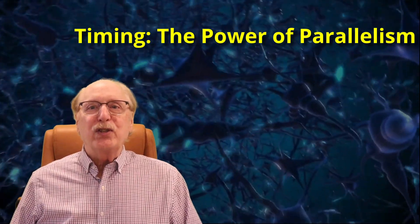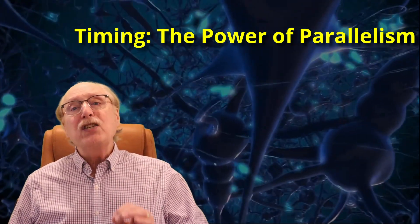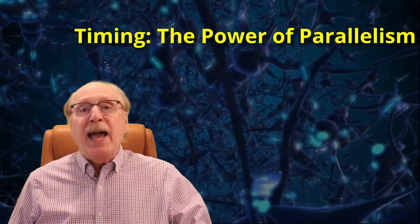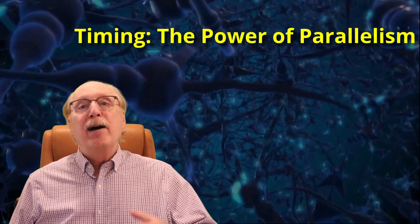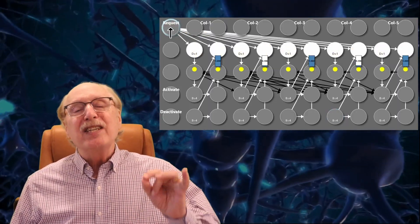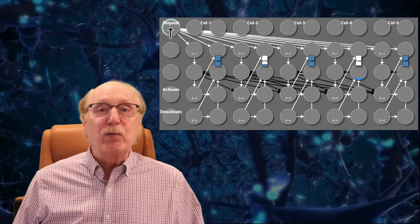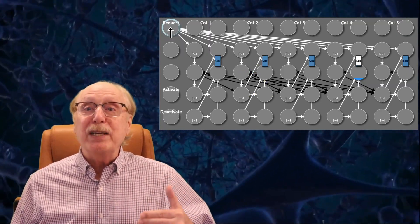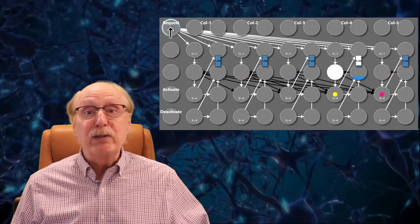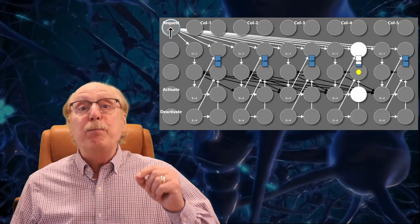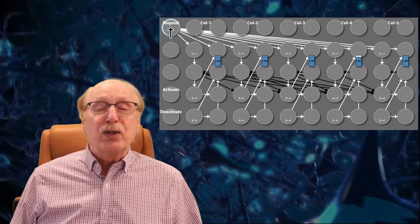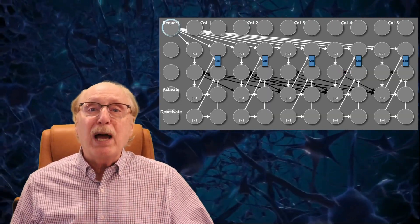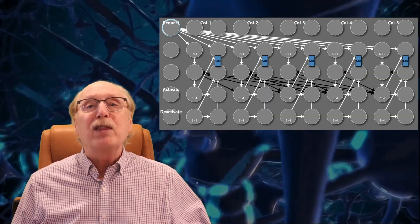Here's what makes this system really amazing. The whole process takes just five milliseconds. And it doesn't matter how many columns are in play. Five, ten, a thousand. The system still picks the right one in the same amount of time. Why? Because it's parallel. All columns receive the request at the same time, and the selection process is handled locally through fast synaptic interactions. No loops, no serial scanning. This is one of the brain's biggest advantages over traditional computers. Biological neural systems aren't just powerful, they're fast because they do everything at once.